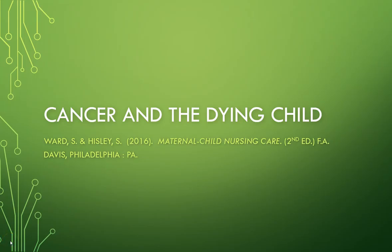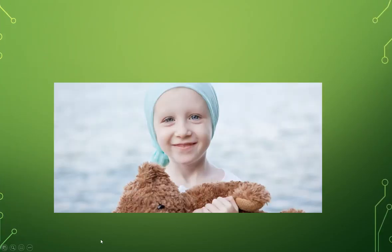I'm going to start this Module 9 recording of Cancer and the Dying Child. You'll find this in your textbook chapters 33 and 34. There's a very beautiful picture of a little girl with her head wrap on and her teddy bear. She's really bright and beautiful and smiling. They don't look a whole lot different than normal children, other than they're probably going to be a little more frail, a little more pale. We need to treat them just like we would any other kid with a few exceptions, and that's what we're going to be talking about.